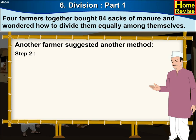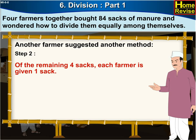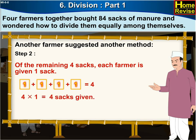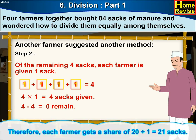Step 2. Of the remaining four sacks, each farmer is given one sack. 1 plus 1 plus 1 plus 1 is equal to 4. Four times 1 is equal to 4 sacks given. 4 minus 4 is equal to 0 remain. Therefore, each farmer gets a share of 20 plus 1, which is equal to 21 sacks.